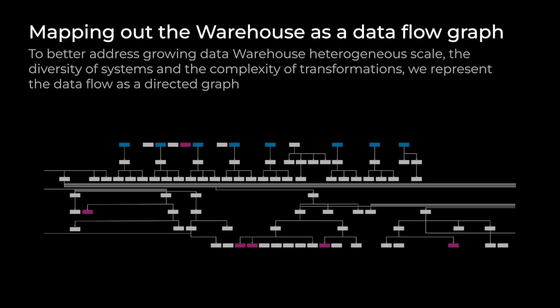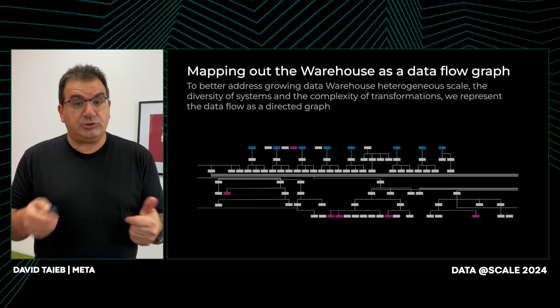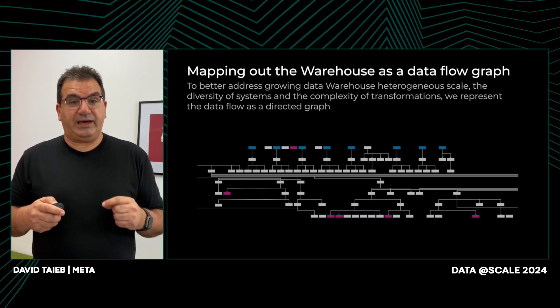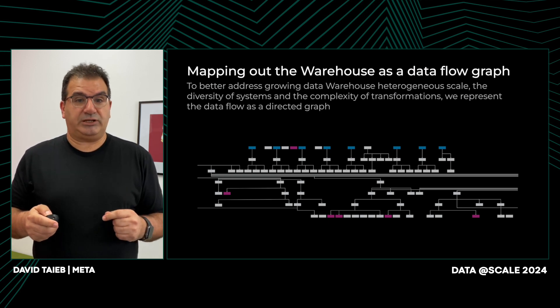The main idea is to map out all the diverse assets in the warehouse and the data flows as a giant global graph. This will allow us to perform powerful graph analytics at scale and further explore the rich relationships between those assets. It will also enable us to create new visualizations that provide new insights into those relationships.